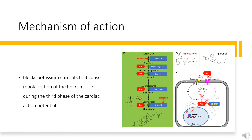Mechanism of Action: Amiodarone is considered a Class III antiarrhythmic drug. It blocks potassium currents that cause repolarization of the heart muscle during the third phase of the cardiac action potential. As a result, amiodarone increases the duration of the action potential as well as the effective refractory period for cardiac cells (myocytes). Therefore, cardiac muscle cell excitability is reduced, preventing and treating abnormal heart rhythms.